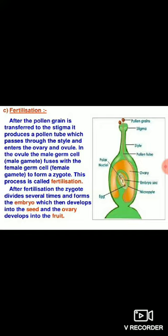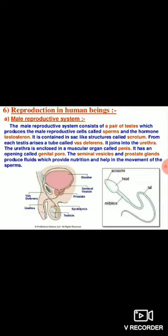After fertilization, the zygote divides several times and forms the embryo, which then develops into the seed, and the ovary develops into the fruit. The rest of the parts of the flower shed off — only seed and fruit are left. The seed is the part mainly required for the development of a new plant. That is how reproduction in flowering plants takes place.